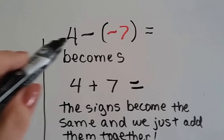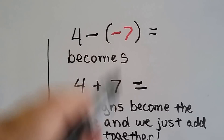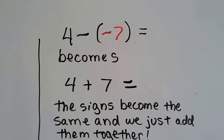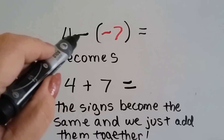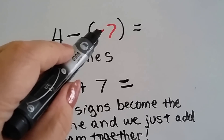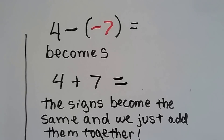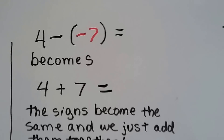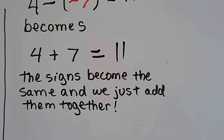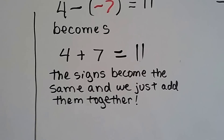We have a positive 4 and we're taking away negative 7. We need to add the opposite. So that subtraction sign becomes a plus sign, and the opposite of negative 7 is positive 7. We have 4 plus 7 — first grade — 4 plus 7 is 11. And the signs become the same, we just add them together.